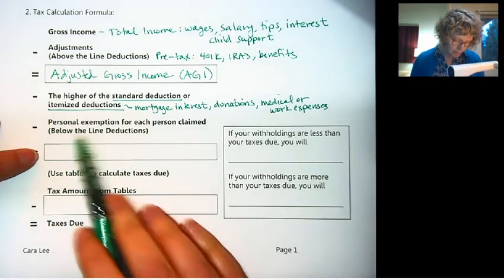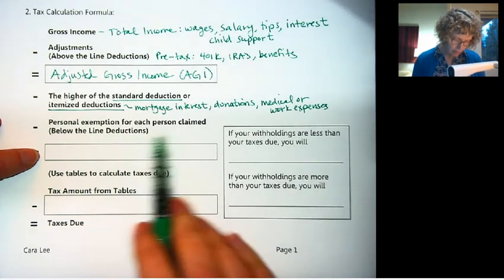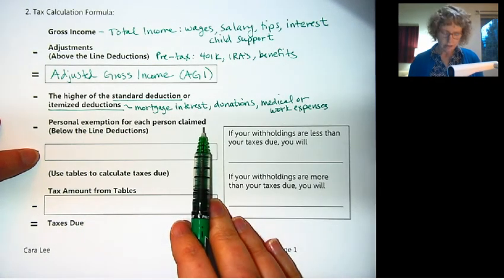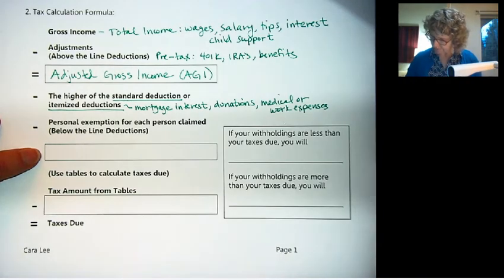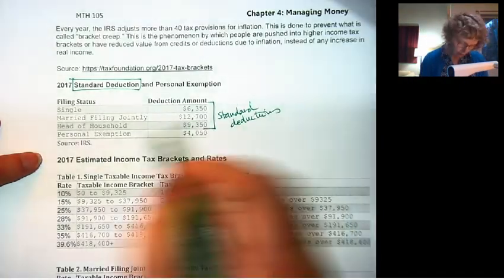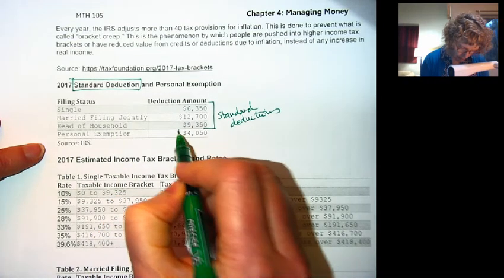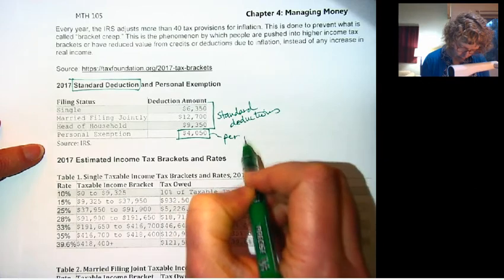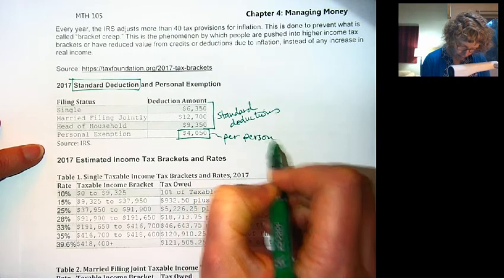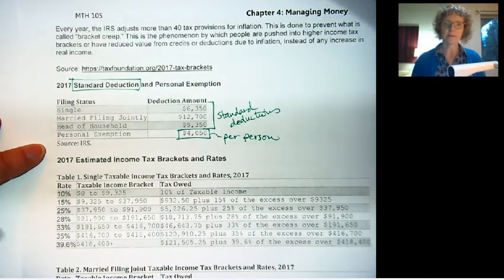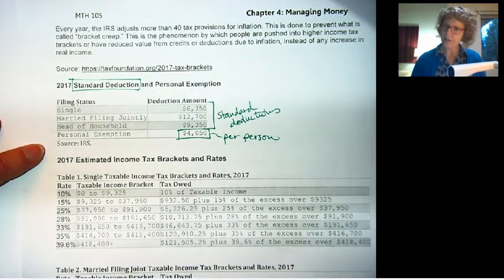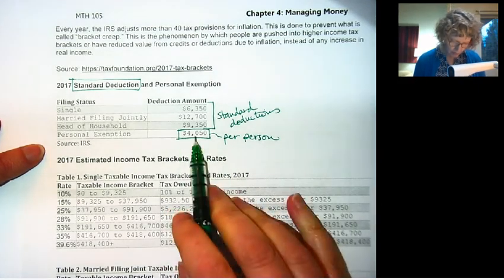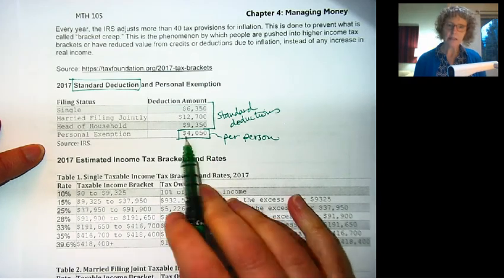The other thing is you get a personal exemption for each person claimed on the return. So if you are filing single, you would get one exemption. So here's the personal exemption right here, and this is per person. You'll get these tax tables in class when we practice these. So this is per person. So if you're single, you would get one of these.